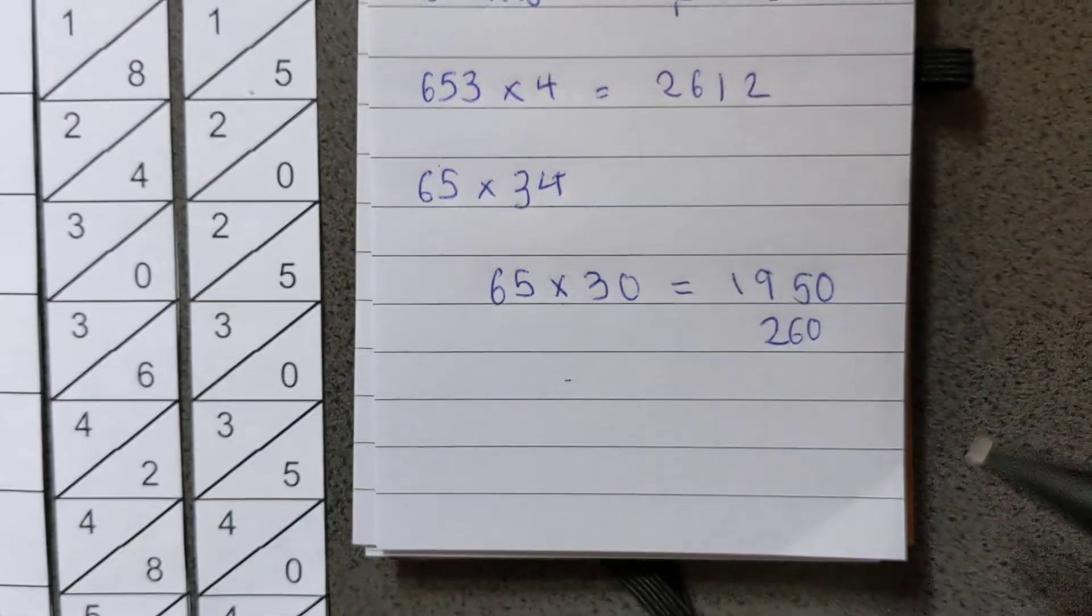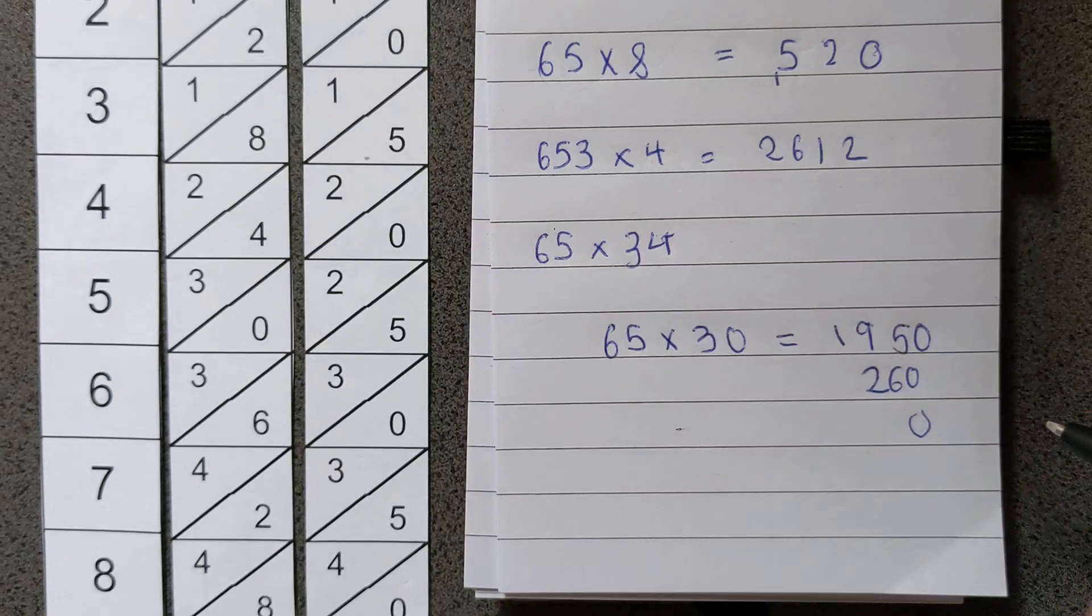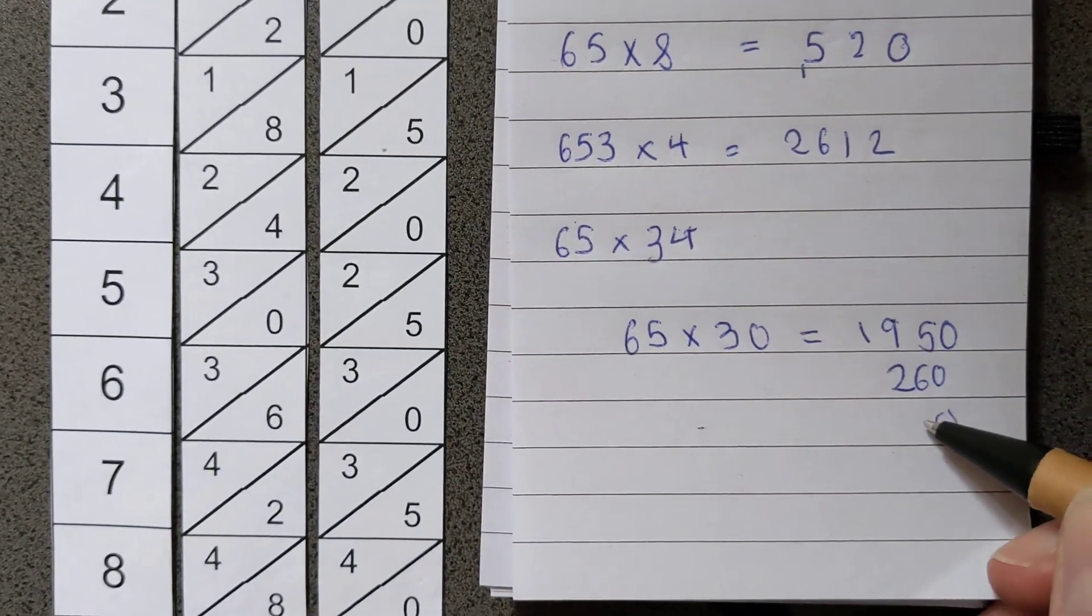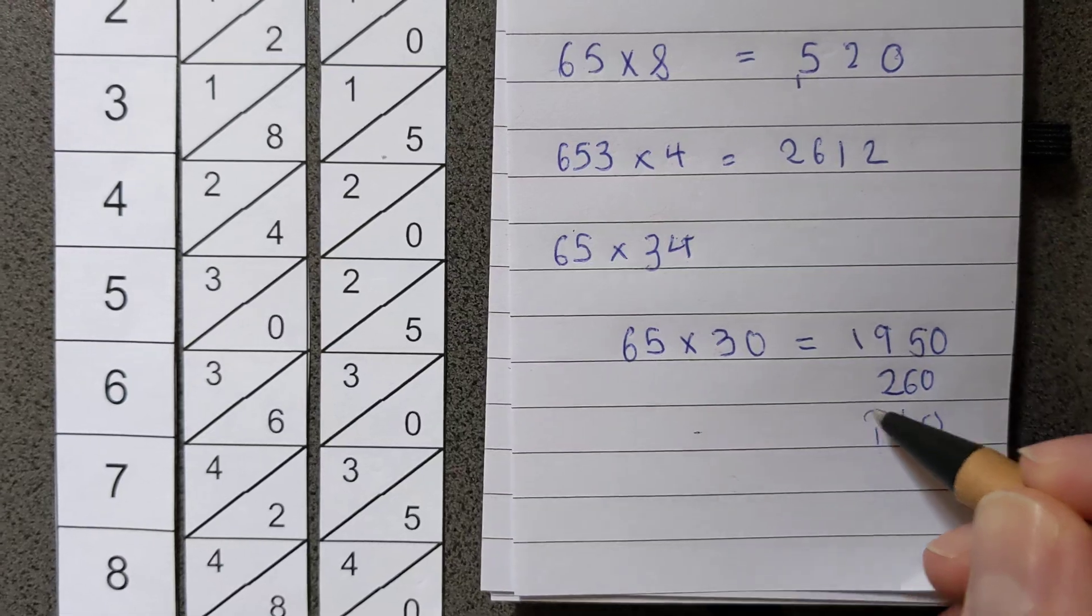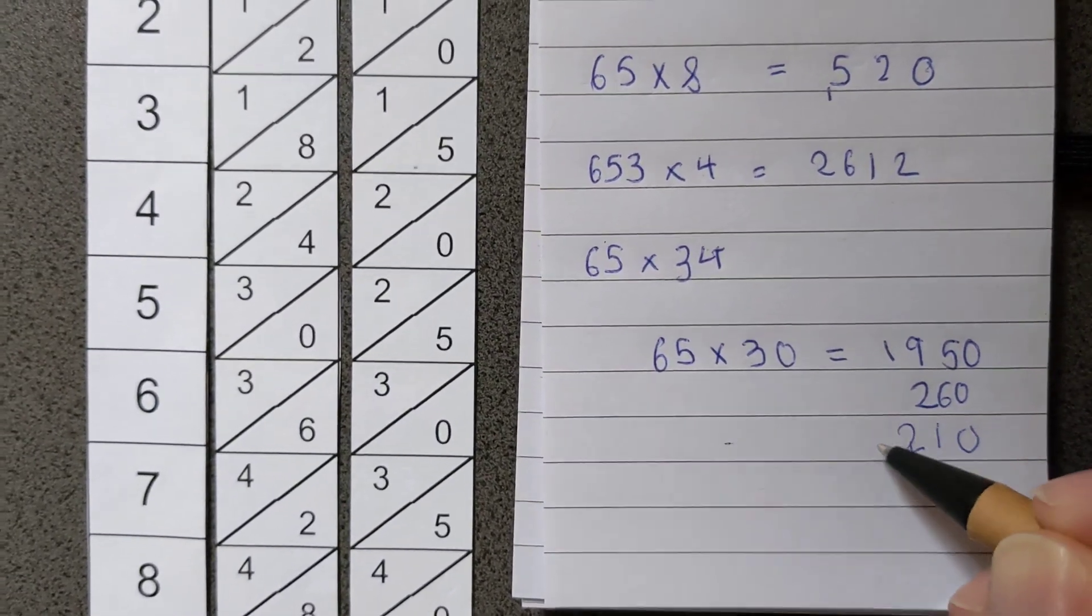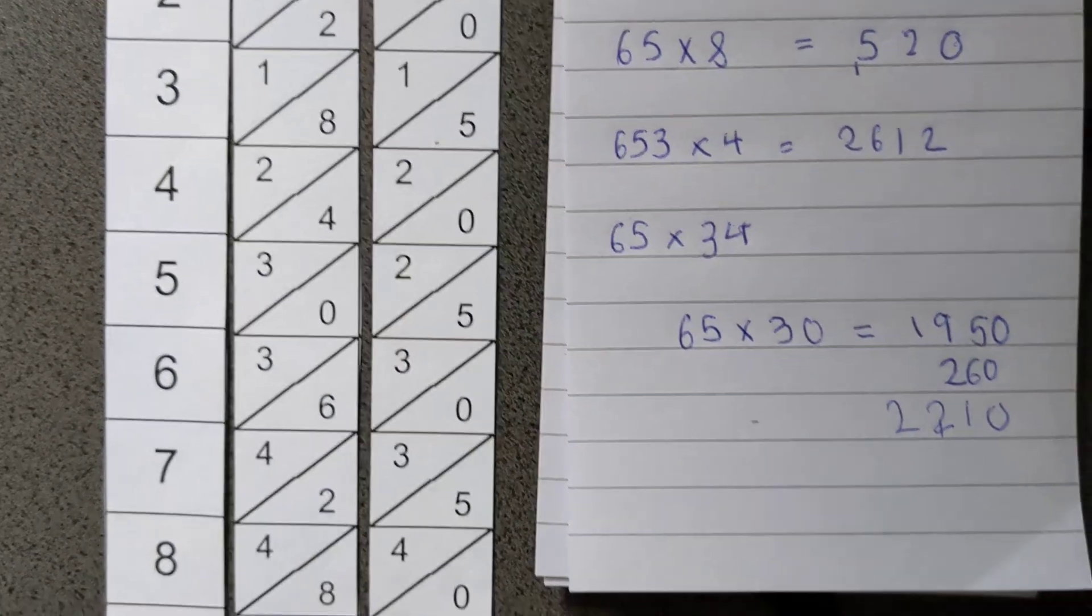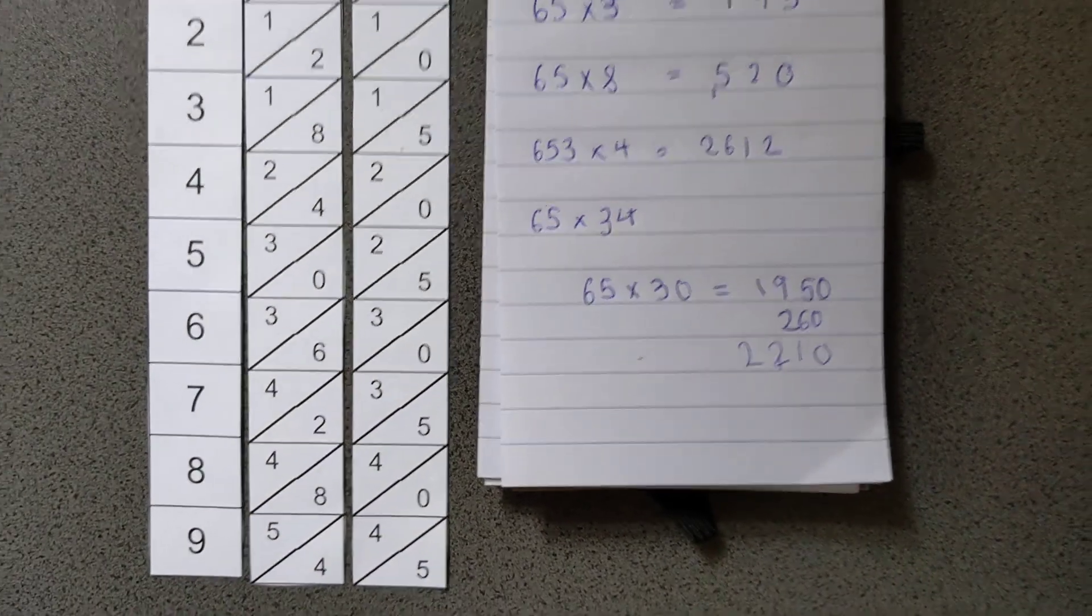And then we'd just add them together in the standard way. So 0 and 0 is 0, 5 and 6 is 11, and we'd carry the 1, 9 and 2 is 11, and we'd carry the 2, so we'd carry the right 2, carry the 1, and so that's 2,210.